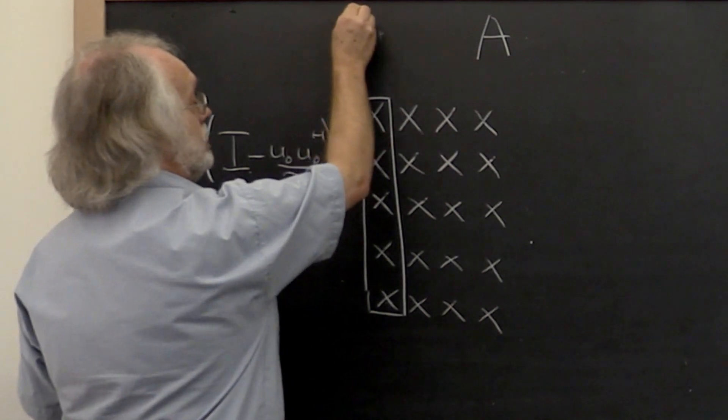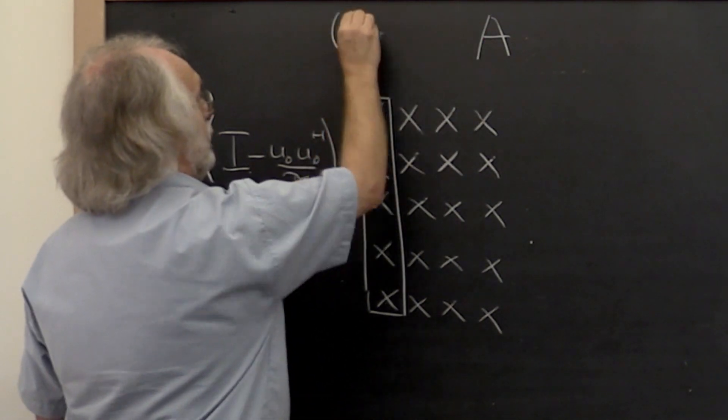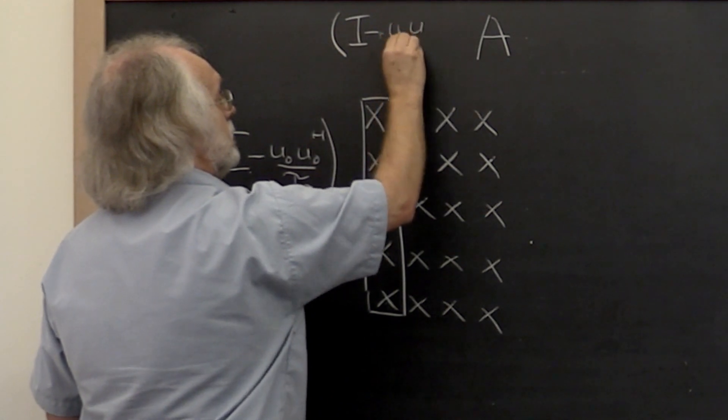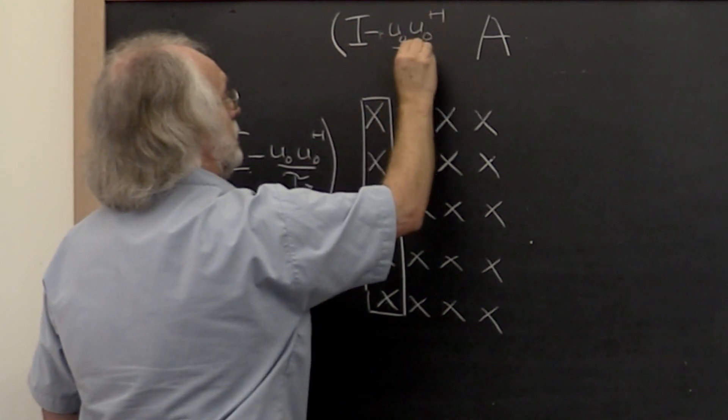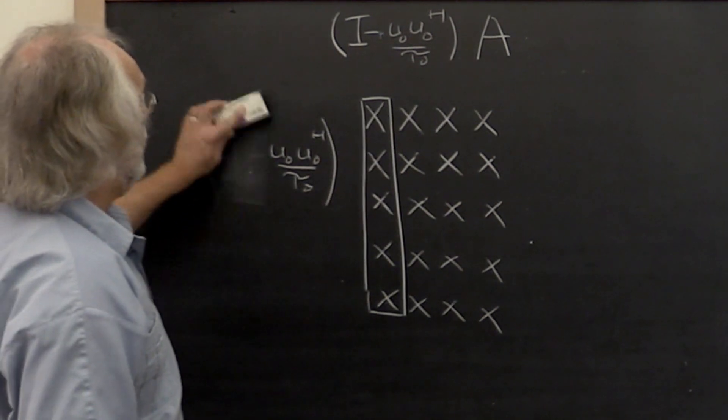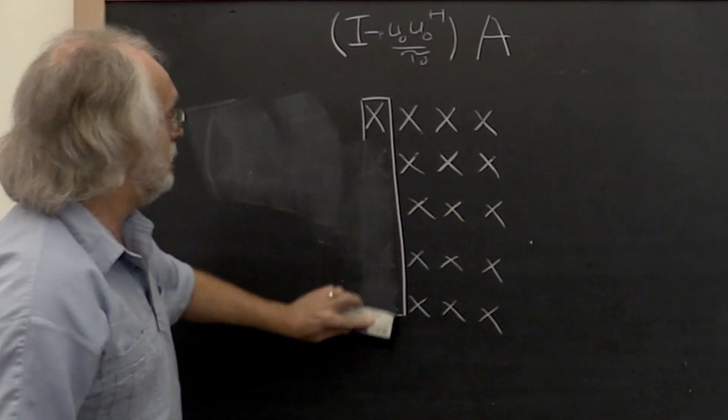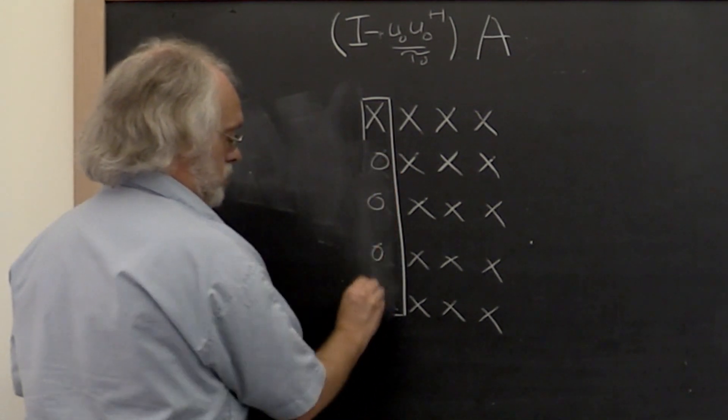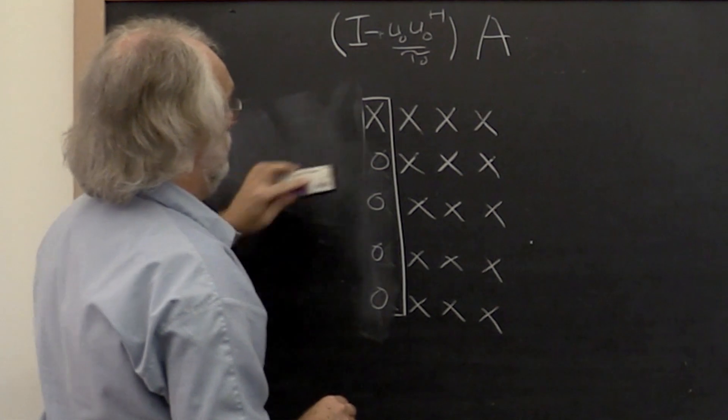So what that really means is that we've taken our matrix A and multiplied it by a matrix as such. So at the end of that we end up with a matrix that looks like this.